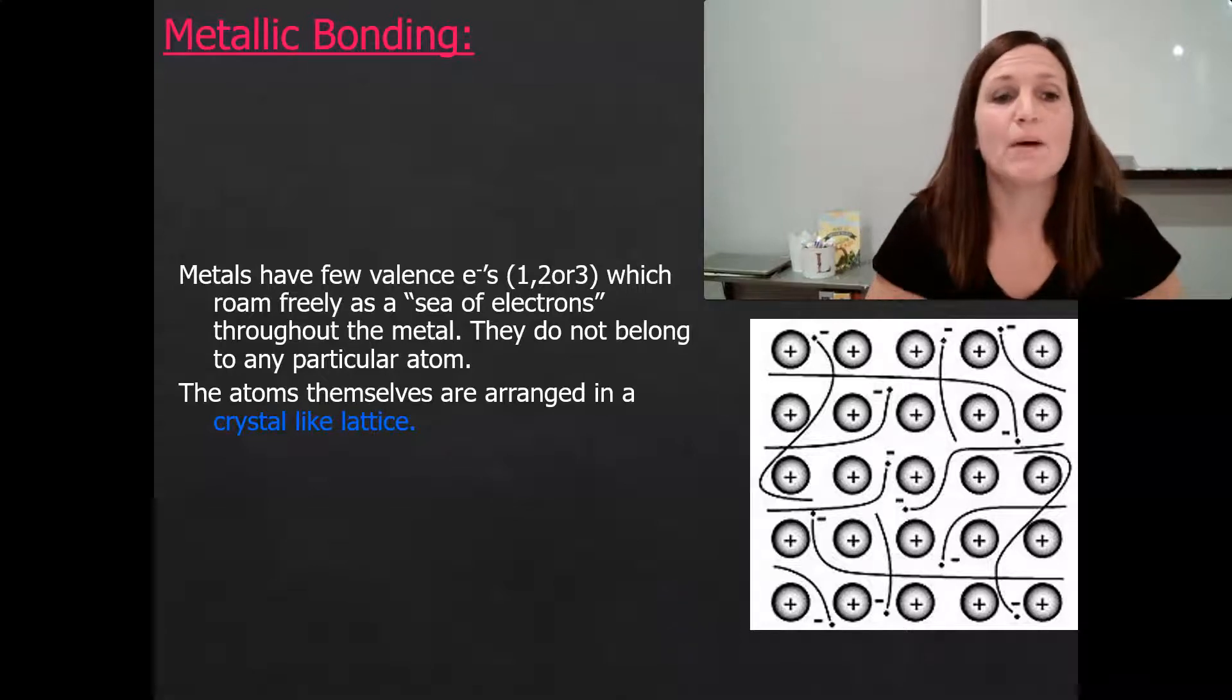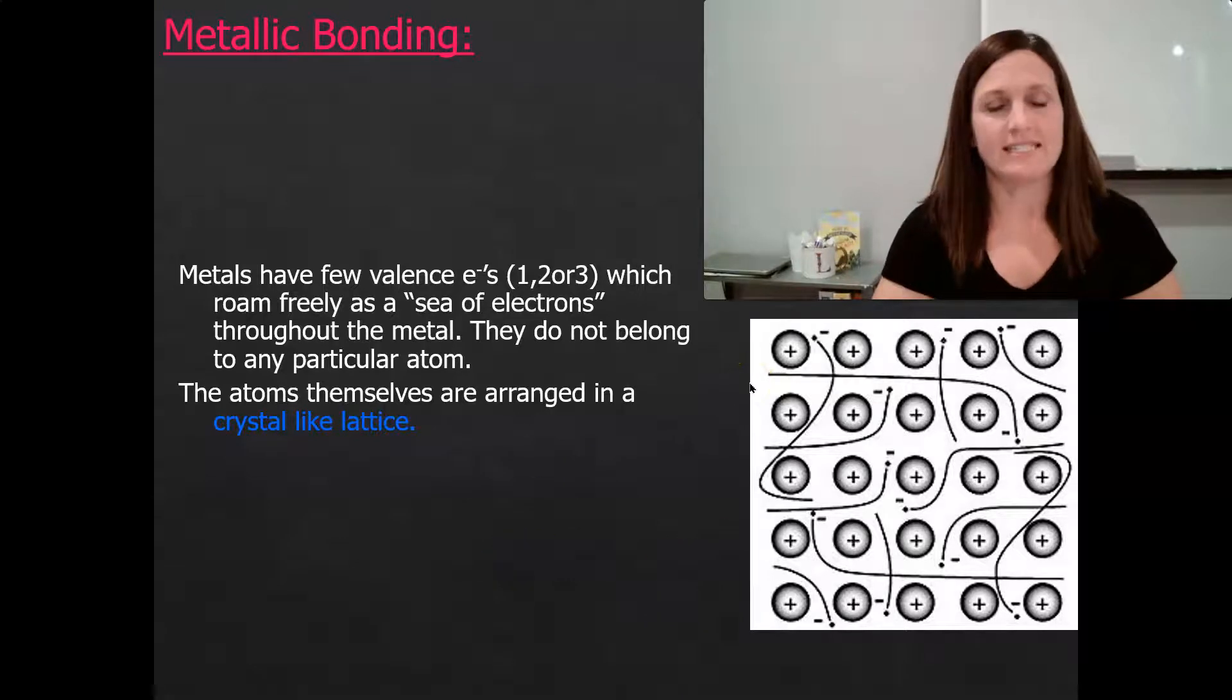Okay guys, so we are going to talk about metallic bonding right now. Metallic bonding exists because metals have few valence electrons.